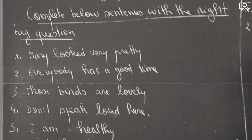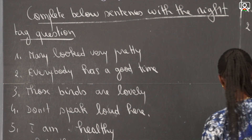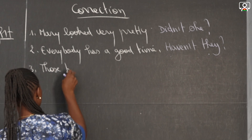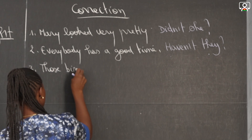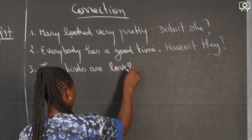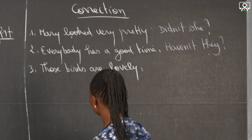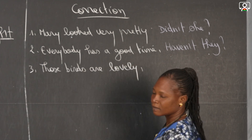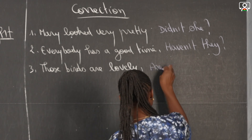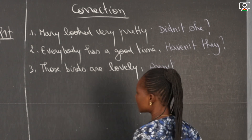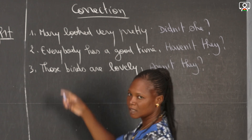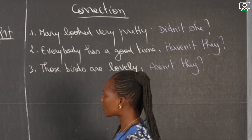Number three: those birds are lovely. So I have an auxiliary, so I'm going to take it. You are going to have 'aren't they'. 'Those' is replaced by 'they'.